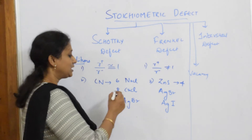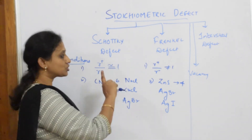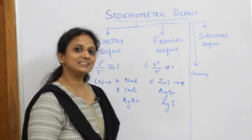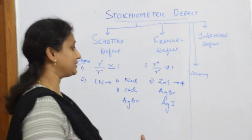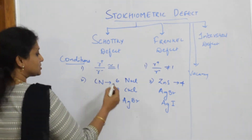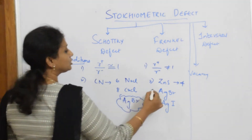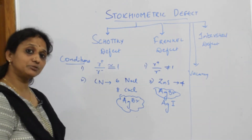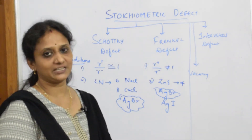Remember, there was one question asked: which crystal shows both Schottky defect and Frenkel defect? That is AgBr. I will be doing a question later in this video — why does AgBr show both Schottky and Frenkel defect? These are the two important conditions you should remember for a crystal to show Schottky and Frenkel defect.